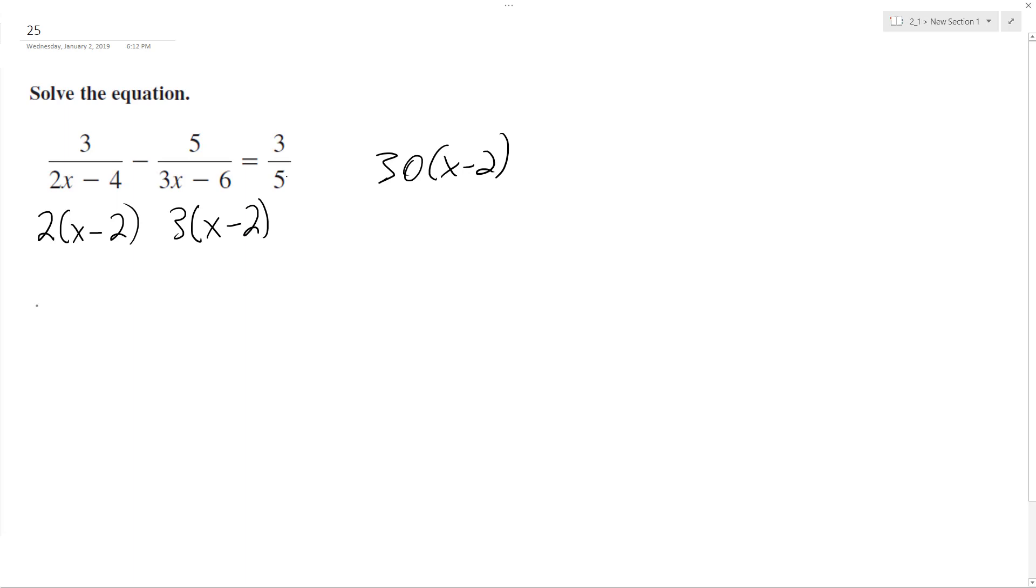So starting off here, I'm going to have 15 quantity x minus 2 times 3 minus 10.